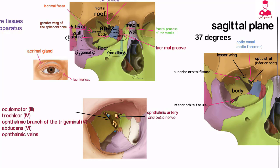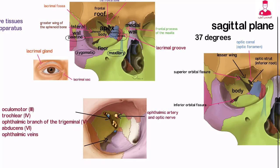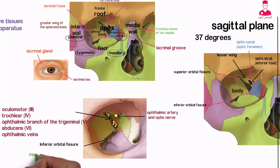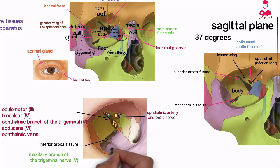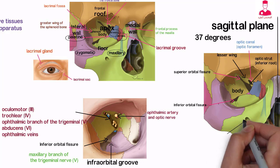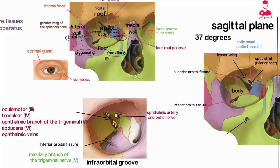At the orbital apex, the inferior and lateral walls of the orbit are separated by the inferior orbital fissure, through which the maxillary branch of the trigeminal nerve courses. The medial lip of the inferior orbital fissure is notched by the infraorbital groove, which passes forward in the orbital floor to become the infraorbital canal, that opens on the anterior surface of the maxilla as the infraorbital foramen.